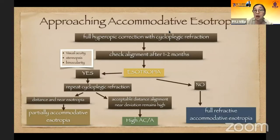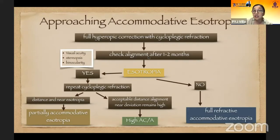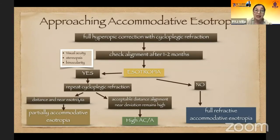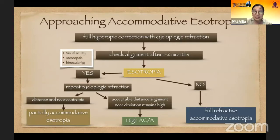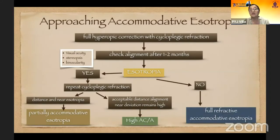How do we approach accommodative isotropia? We give the full hyperopic correction with cycloplegic refraction. We check the alignment after one to two months once we give the spectacles, and we also check visual acuity, stereopsis, and binocularity. If there's a residual isotropia, we repeat the cycloplegic refraction with new spectacles. On follow-up: if isotropia remains for distance and near, the patient has partially accommodative isotropia. If distance alignment is acceptable but near deviation remains high, the patient has a high ACA ratio. If there is no isotropia once spectacles are given, the patient has full refractive accommodative isotropia.